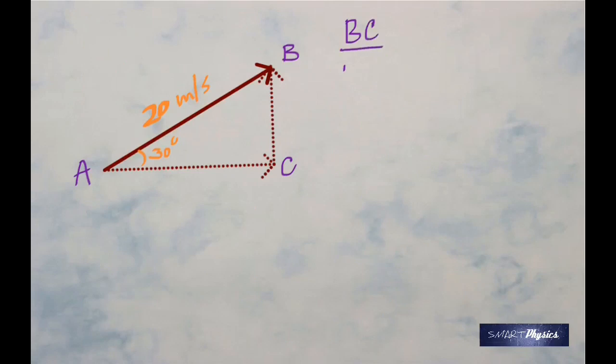BC, if you take BC by AB, what do you get? BC is the opposite side, AB is the hypotenuse, so you've got to get sin theta. Yes, so BC by AB is sin 30 degrees.